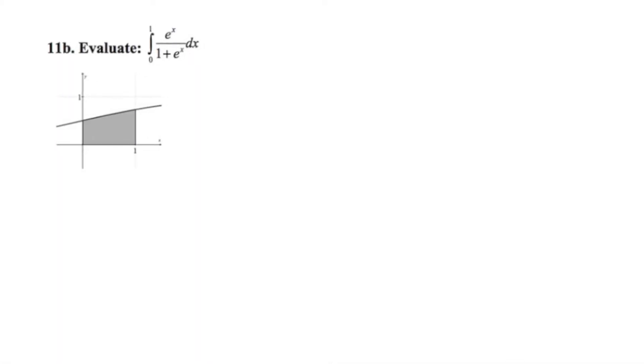Number 11b, we're supposed to find the area under the curve of e to the x over 1 plus e to the x from 0 to 1. Now this time, the power of e is just plain old x, which is the simplest case, except that we've got this quotient in which both the numerator and the denominator contain an e to the x. It's a little bit more complicated.